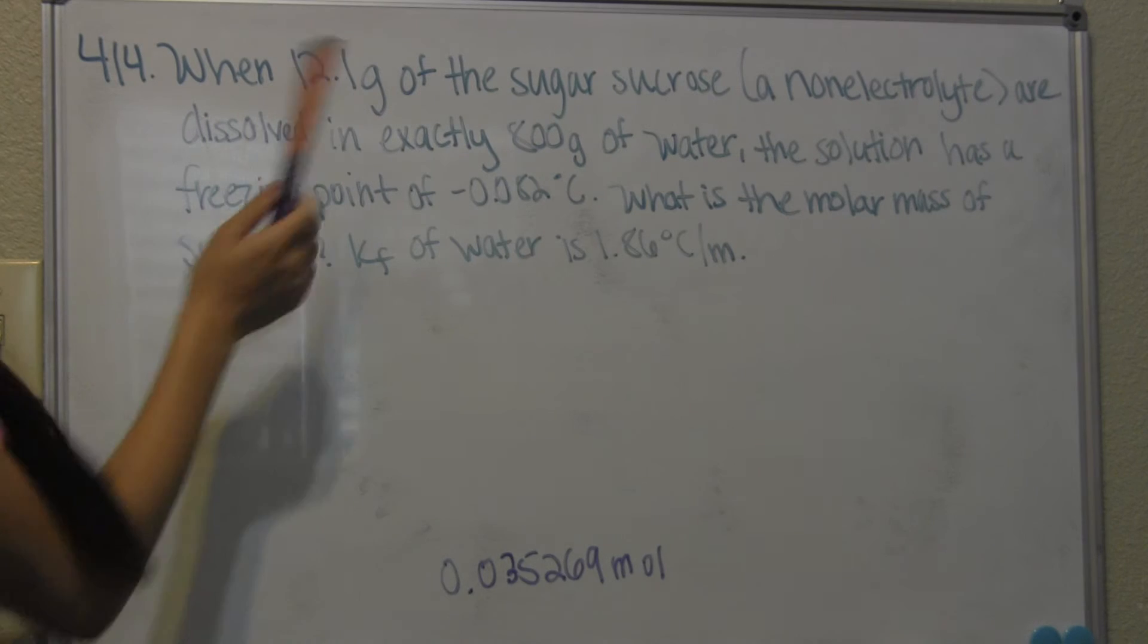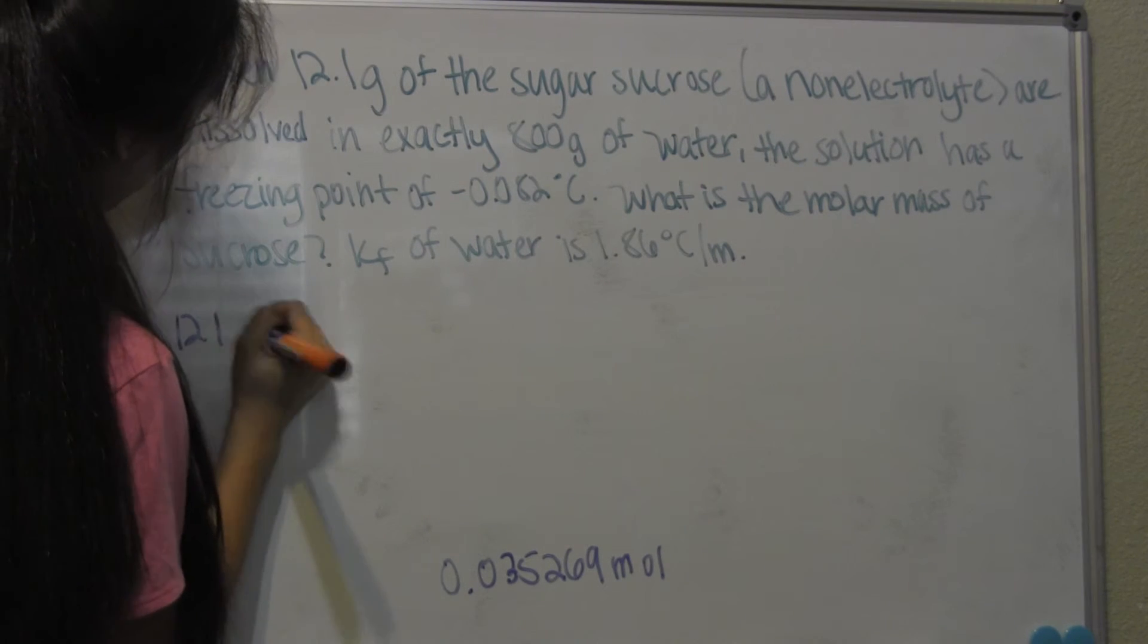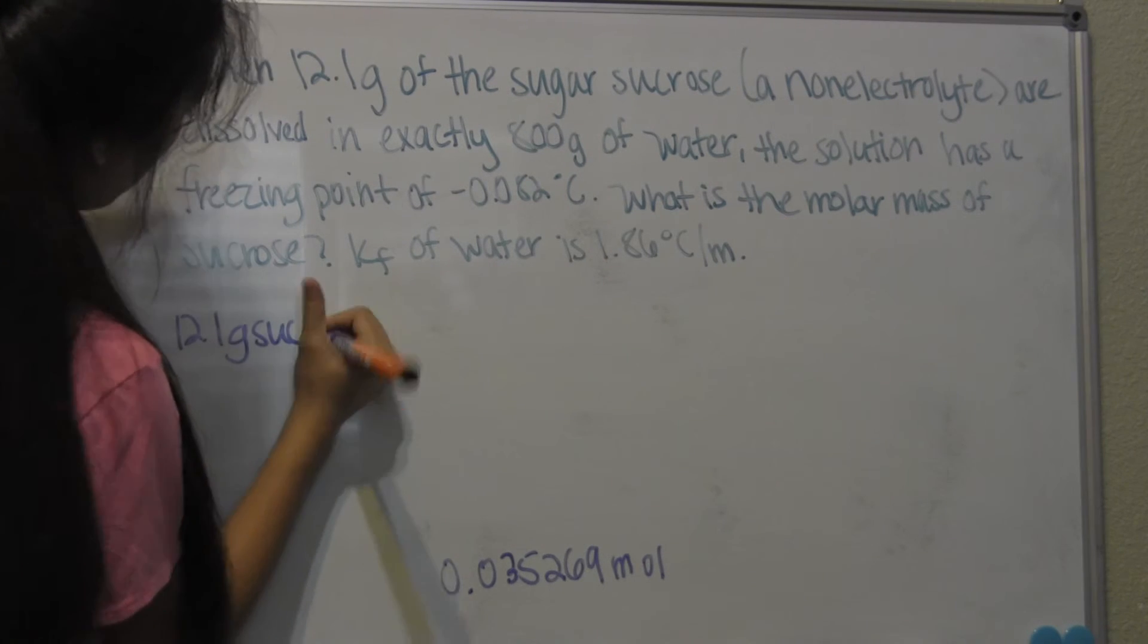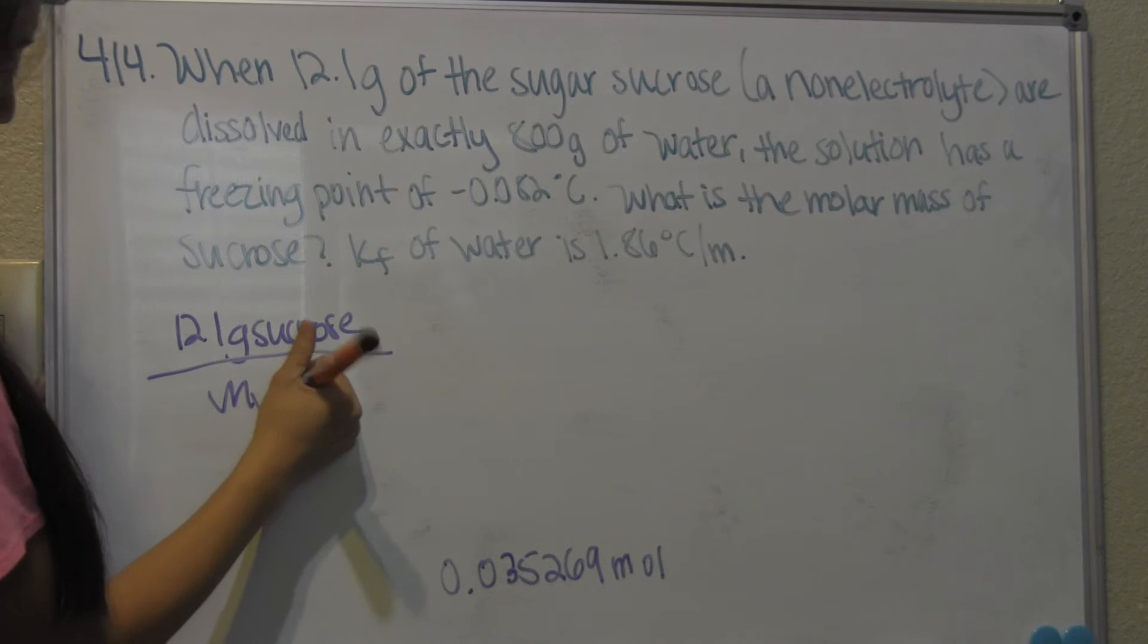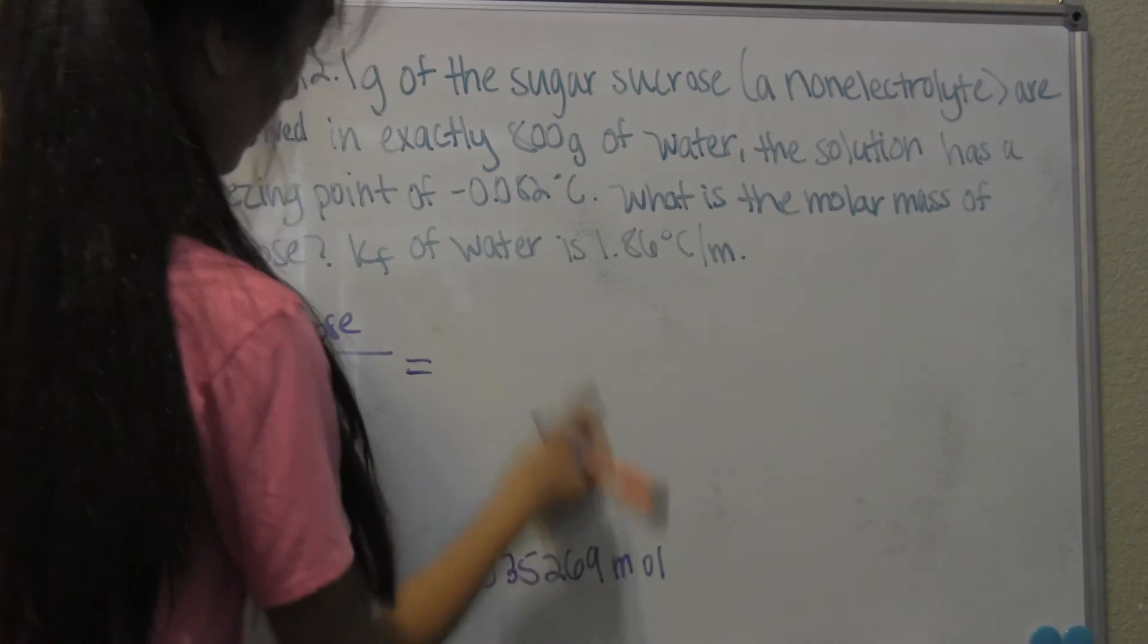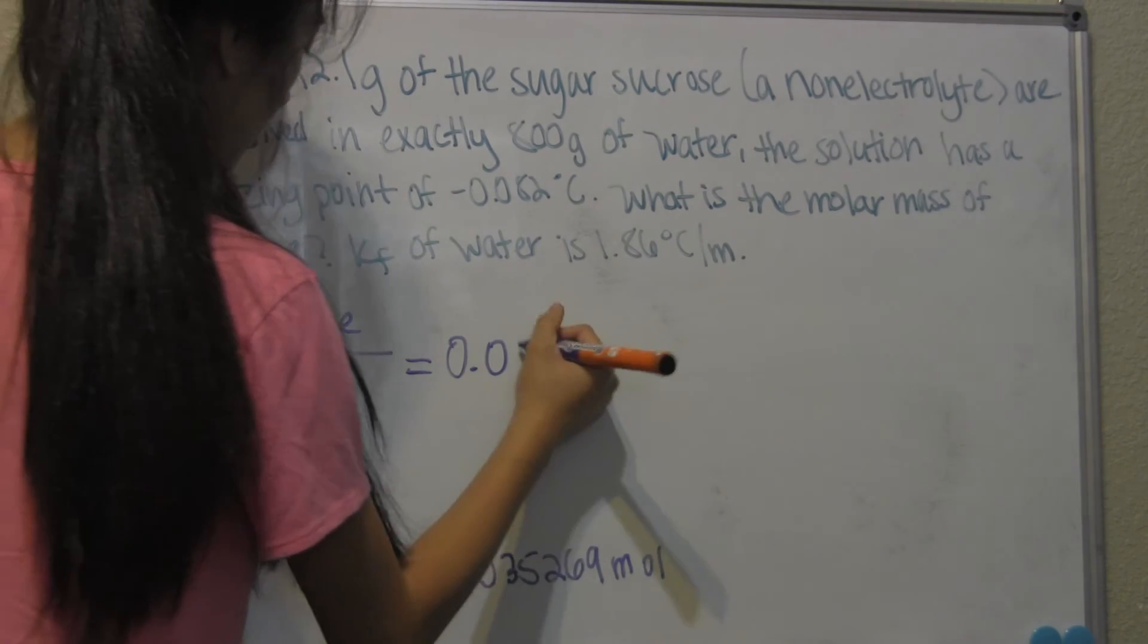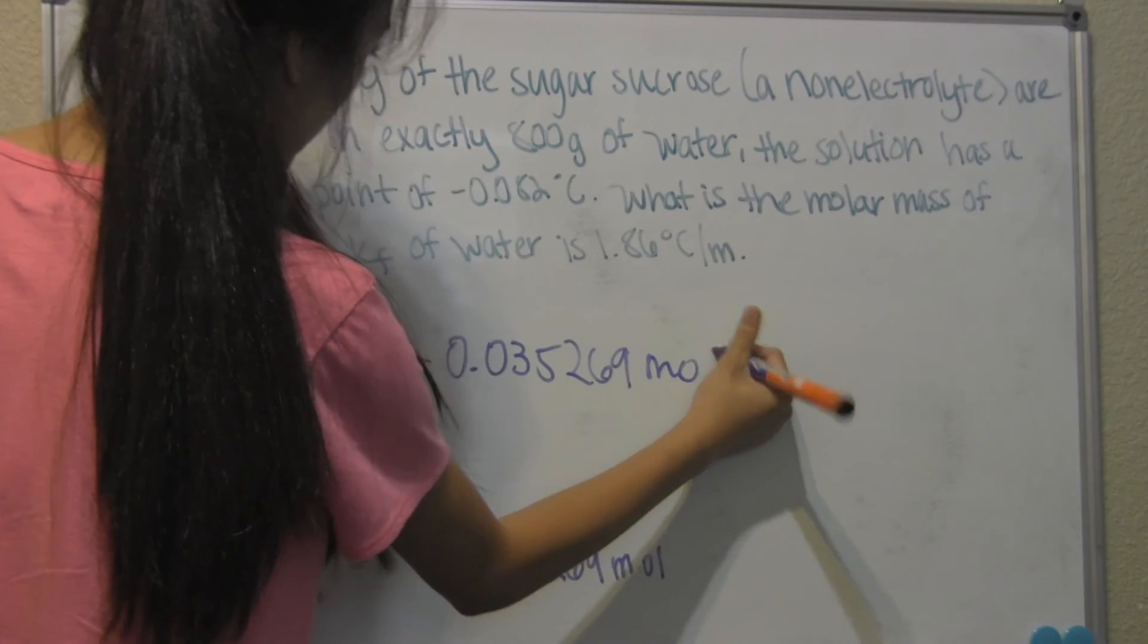we can use the 12.1 grams of the sugar sucrose, so 12.1 grams of sucrose over the molar mass. Molar mass is in grams, and that will equal this number down here, which is the moles of solute, 0.035269 moles.